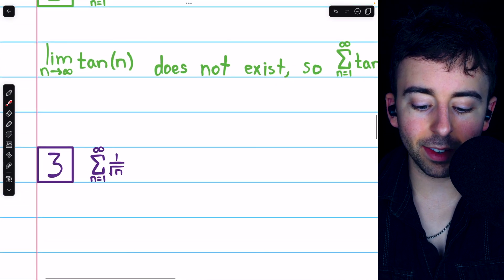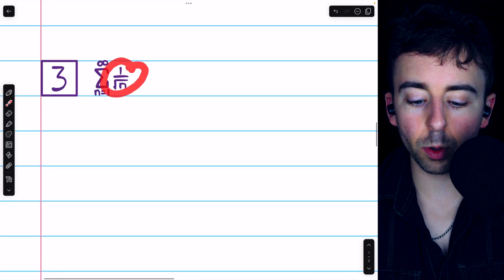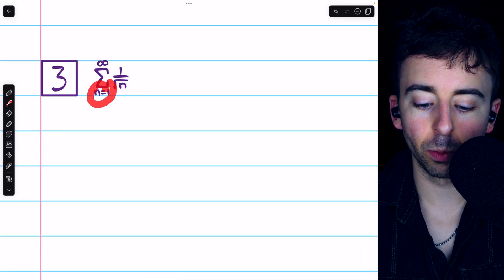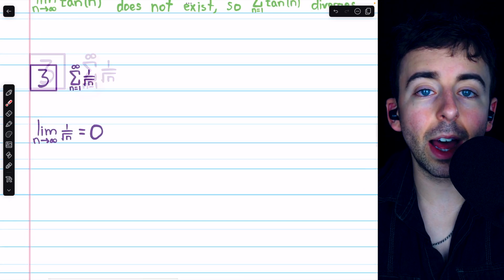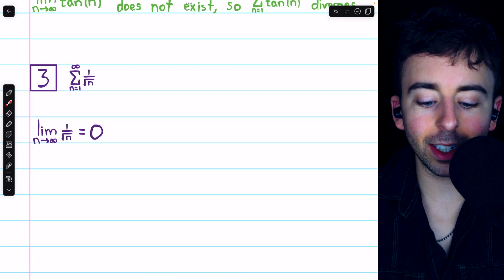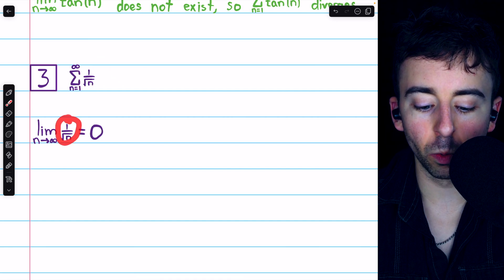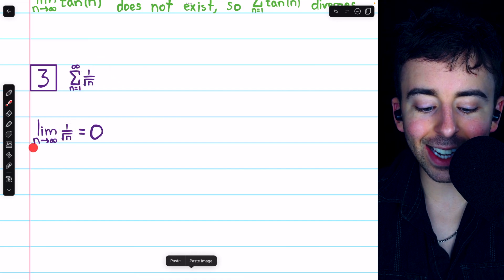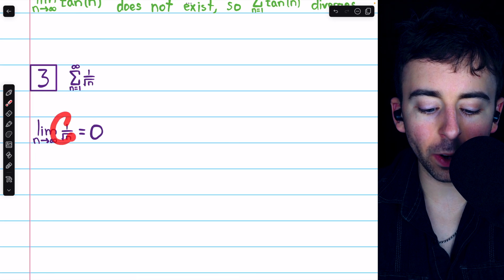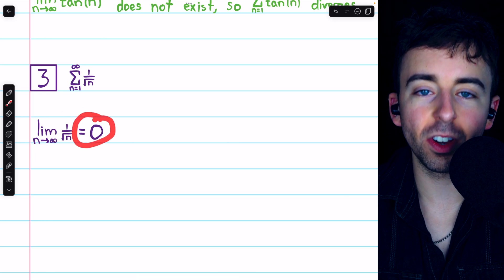Finally, last example, the sum of terms 1 over root n, as n goes from 1 to infinity. Applying the divergence test, we must look at the limit of the terms of the series. The terms of the series are 1 over root n, and as n goes to infinity, of course, this is going to approach zero.